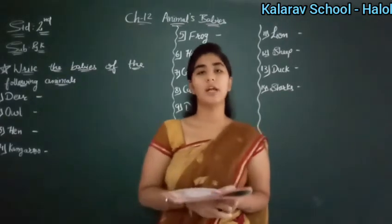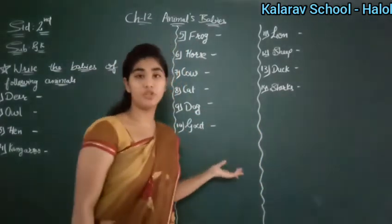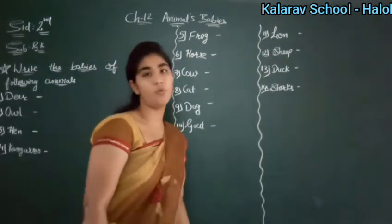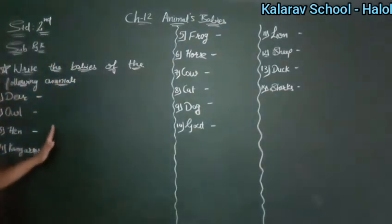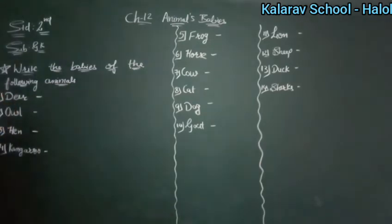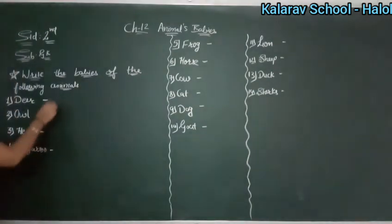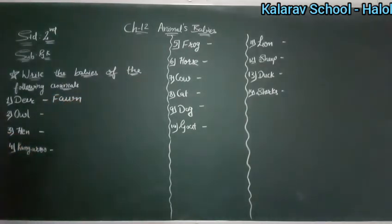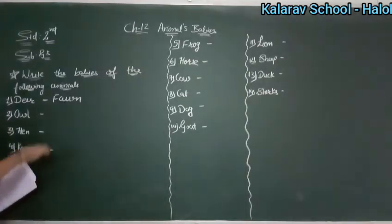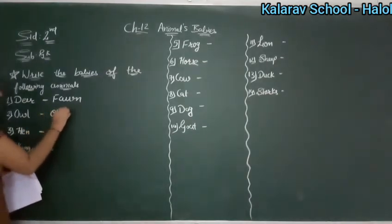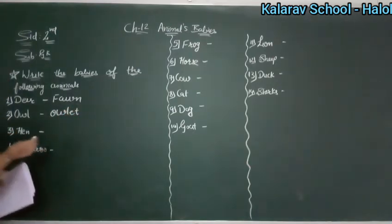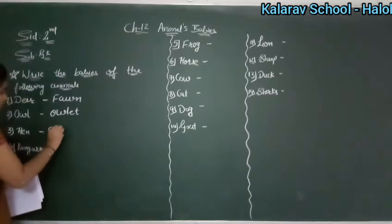So you clear up till here? Now see here, some animals' names are given to you. You have to write in front of them their babies' names. Animals ke naam diye hain, tum ko unke babies ka naam likhna hai. Deer — deer ka baby kaun hota hai? That is fawn. Phir hai owl — owl ke baby ko kya bolenge? Owlet. So here you will write owlet. Phir hai hen — chick. So here you will write chick.